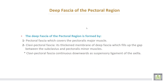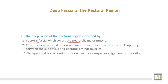The deep fascia of the pectoral region is formed by: number one, the pectoral fascia, which covers the pectoralis major muscle; and number two, the clavipectoral fascia, which is a thickened membrane of the deep fascia that fills the gap between the subclavius muscle and the pectoralis minor muscle. The clavipectoral fascia continues downward as the suspensory ligament of the axilla.